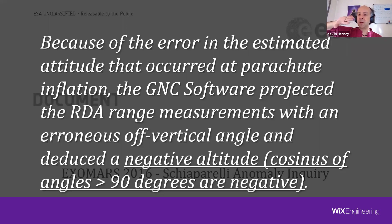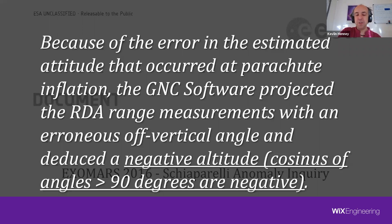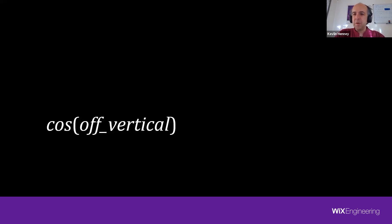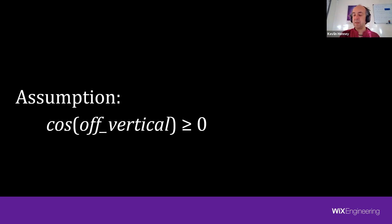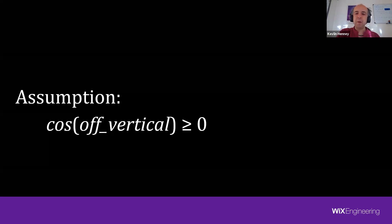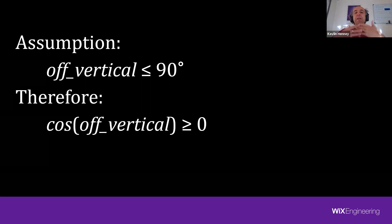As the report states: 'Error in the estimated attitude occurred at parachute inflation — we made measurements with an erroneous off-vertical angle and deduced a negative altitude.' And then there's this beautiful understatement: 'Cosine of angles greater than 90 degrees is negative.' What we're discovering is that somewhere in the code, we're taking the cosine of the off-vertical angle, and there's an invisible assumption that the angle is less than or equal to 90 degrees, so the cosine is always non-negative. That assumption is invisible.